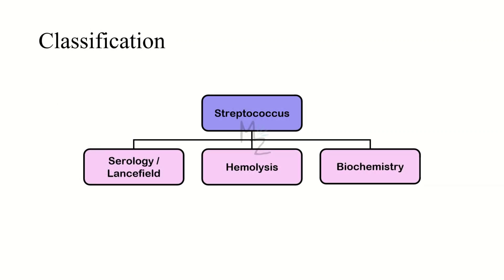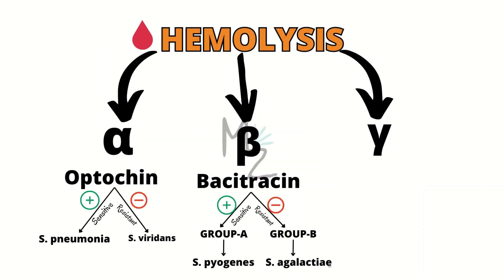Classification of streptococcus is based on the Lancefield serology — devised by Rebecca Lancefield — and also on hemolysis and biochemistry. On the basis of hemolysis, strep bacteria are classified into alpha-hemolytic, beta-hemolytic, and gamma-hemolytic. Alpha causes partial hemolysis, beta causes complete hemolysis, and gamma causes no hemolysis. Alpha-hemolytic bacteria are further classified based on optochin sensitivity into strep pneumoniae and strep viridans.